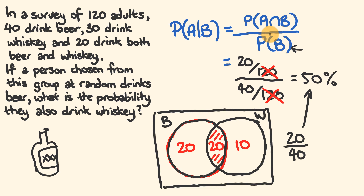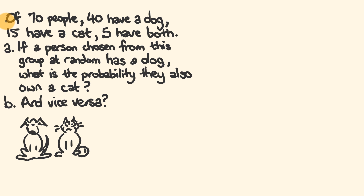What about we have a look at another example? If you like this video so far, please hit the like button and subscribe. For our final example: of 70 people, 40 have a dog, 15 have a cat, and 5 have both. If a person chosen from this group at random has a dog, what's the probability they also own a cat?